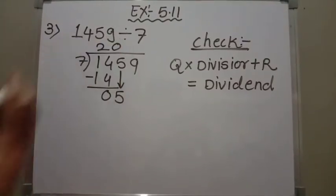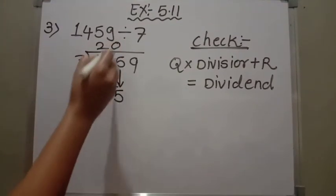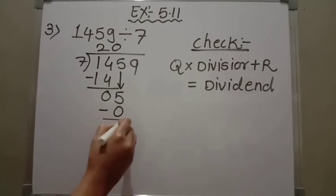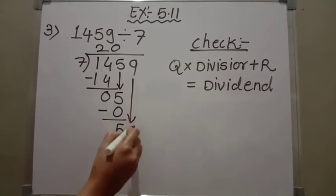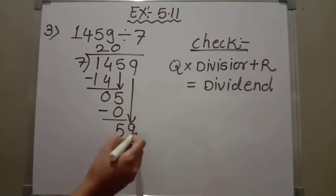0 times. So here I am going to write 0. 7 into 0 is 0. And 5 minus 0 is 5. Then the last digit, 9, will come down. So it's 59 now.